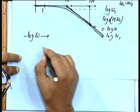And then the actual plot will be somewhat like this. We are not interested in the exact plot. This is 20 dB per decade, this will be 40 dB per decade.